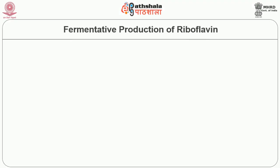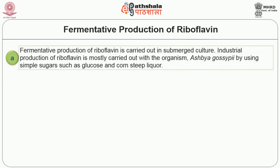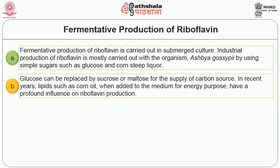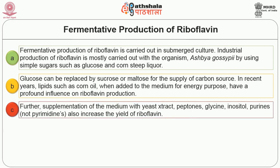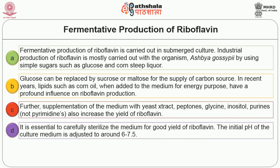Fermentative production of riboflavin is carried out in submerged culture. Industrial production of riboflavin is mostly carried out with the organism Ashbya gossypii using simple sugars such as glucose and corn steep liquor. Glucose can be replaced by sucrose or maltose as the carbon source. In recent years lipids such as corn oil, when added to the medium for energy purposes, have a profound influence on riboflavin production. Further supplementation of the medium with yeast extract, peptones, glycine, inositol and purines also increases the yield of riboflavin.